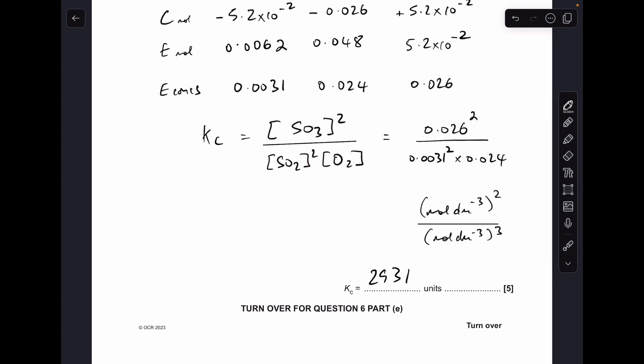So from the Kc expression you can see we've got moles per decimeter cubed squared units on the top, moles per decimeter cubed cubed units on the bottom. So they cancel down to 1 over moles per decimeter cubed. So obviously taking everything up to the top gives dm cubed mole to the minus 1 as our units.